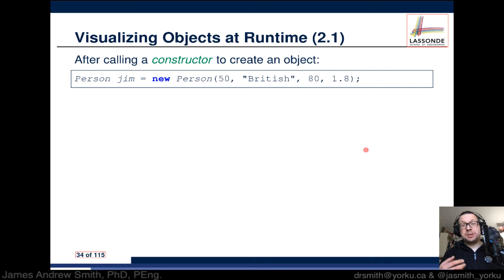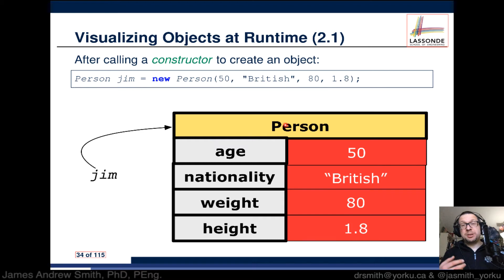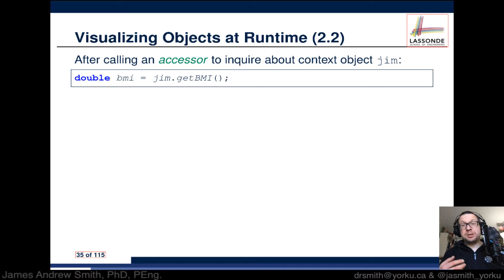After calling a constructor to create an object, we have Jim of type Person. On the right-hand side of the assignment operator is the constructor call. The box diagram shows the title at the top, the attribute names on the left, and the values on the right. The variable jim points to this specific instance of the class Person. After calling the accessor method, double bmi is assigned the value returned by jim.getBMI().